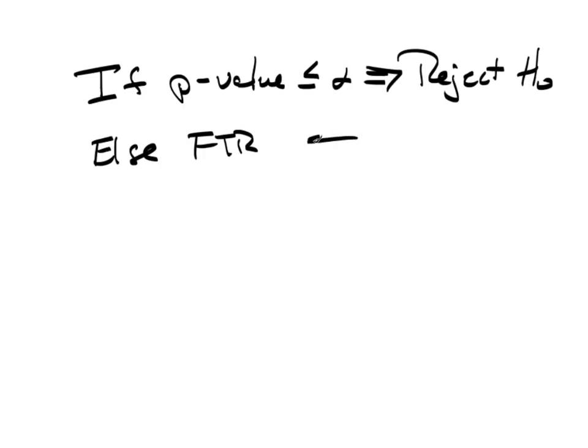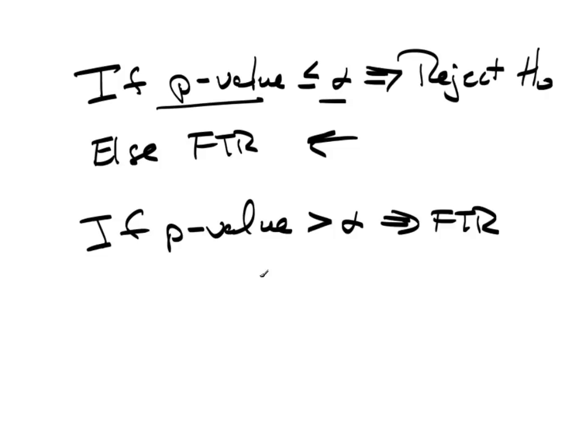This is saying, I don't want to write this out, but I will. If the p-value is greater than alpha, then fail to reject. So, what we're looking for is a p-value less than alpha. And again,